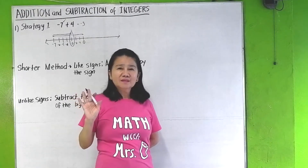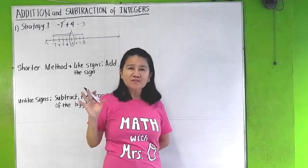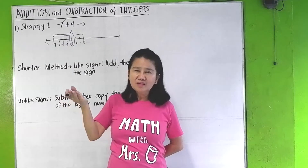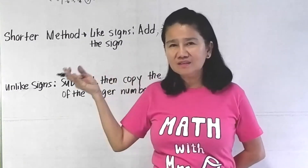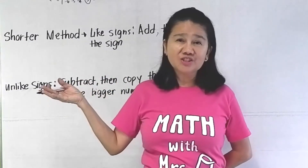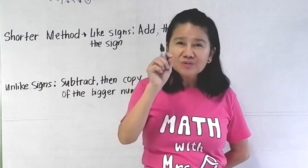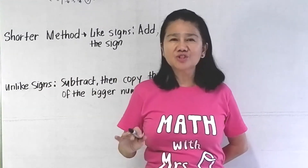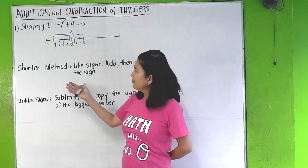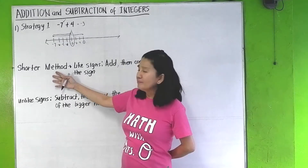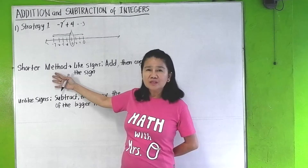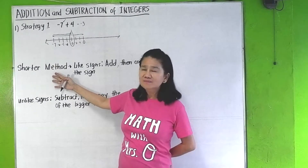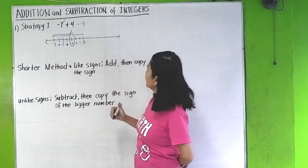But I don't recommend using this method, because what if we have like negative 1,000 added to another large number? You'd have to go step by step hopping, so it's not a good strategy. I'm going to show you a shorter method on how to add integers.